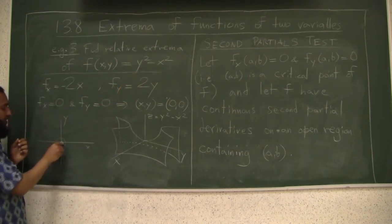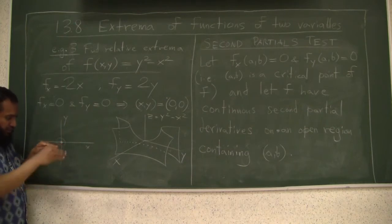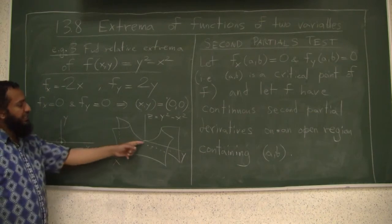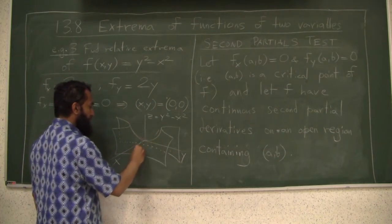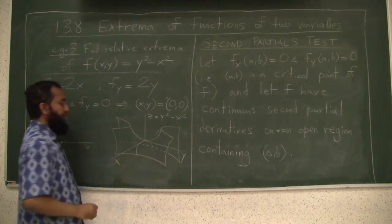So it means no matter how small circle you draw around (0,0), some values are below the height of (0,0) and some values above. That means this guy can never be a local min or max and you can see that in the picture. You go this way, you go up. You go this way, you go down.